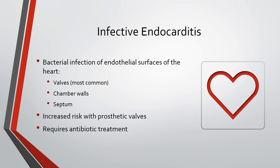Infective endocarditis is a bacterial infection of the endothelial surface of the heart, usually occurring in the valves (most common), chamber walls, or septum. Children with CHD or prosthetic valves are at high risk for acquiring bacterial endocarditis, which can potentially be fatal. Complete antibiotic or antifungal treatment is necessary and may last four to six weeks. These medications will be given systemically through a central line — the patient will probably go home with a PICC line or Hickman catheter. Being aware of any infectious process is vital, and that is what we need to teach our parents.